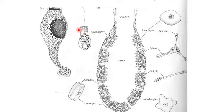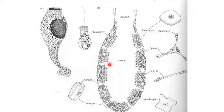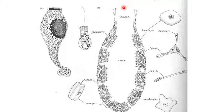The choanocytes have cilia, and because of their beating, they draw in a current of water from outside through the ostia into the central cavity — the spongocoel. Inside, the food and oxygen needed by the sponge are absorbed, and wastes are thrown out through the osculum.